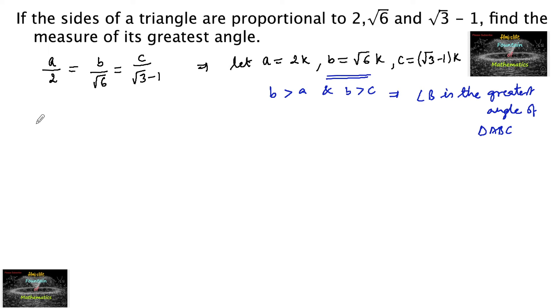So let us find cos B. Cos B equals a squared plus c squared minus b squared upon 2ac.